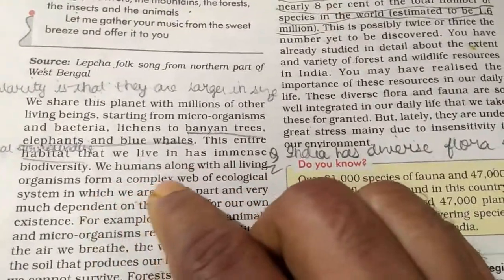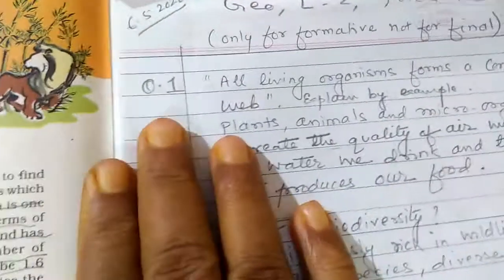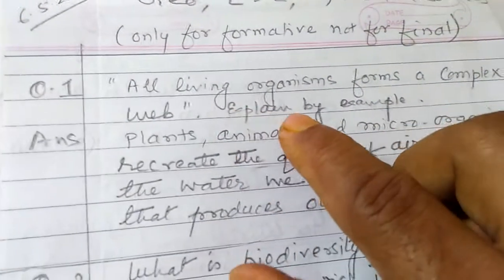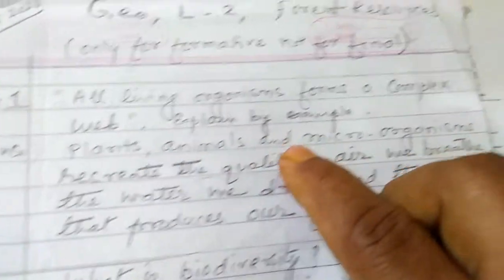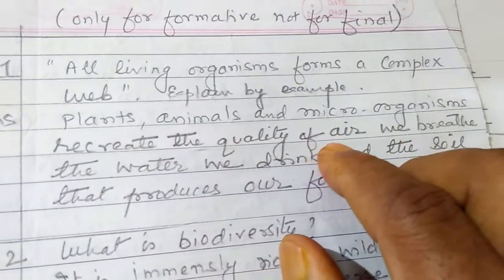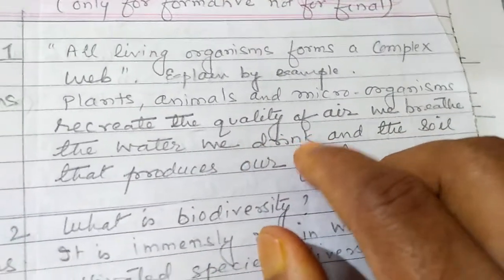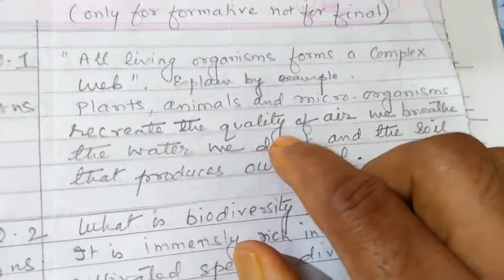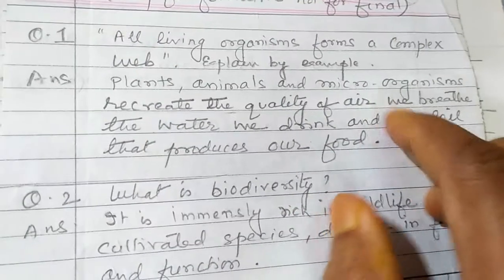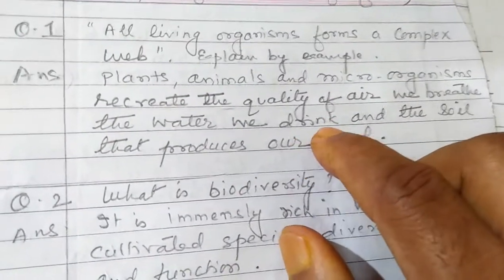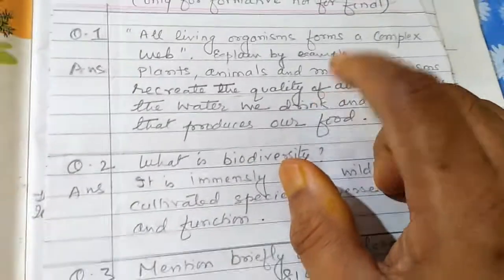Question number one: All living organisms form a complex web — explain by giving an example. The answer: Plants, animals, and microorganisms recreate the quality of the air we breathe. Plants absorb carbon dioxide and give oxygen. Water is purified by the water hyacinth, an aquatic plant. Microorganisms enrich the soil by decomposing leaves and converting them into humus. In this way, all living organisms form a complex web and make the whole biosphere fit for living organisms.